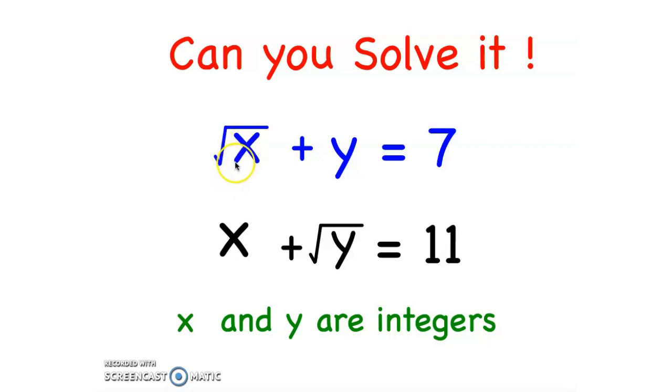Let's solve this interesting equation: radical x plus y equals 7, and x plus radical y equals 11, where x and y are integers. Please pause the video and give it a try.